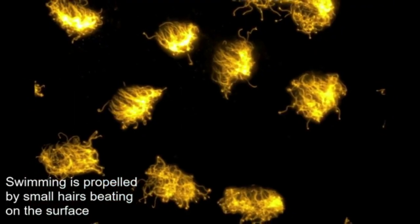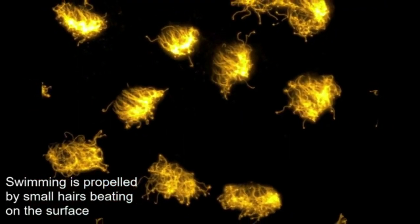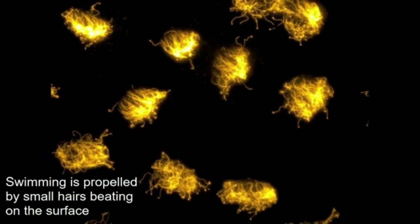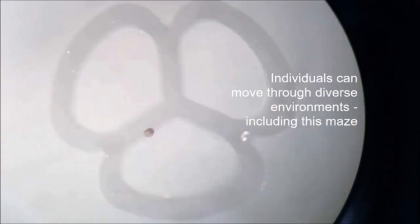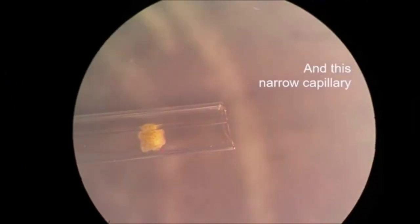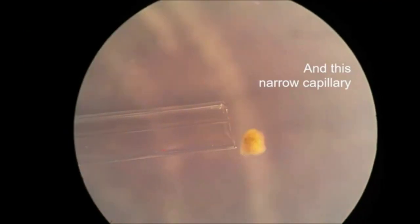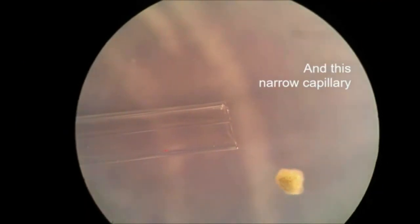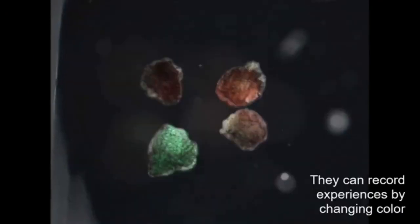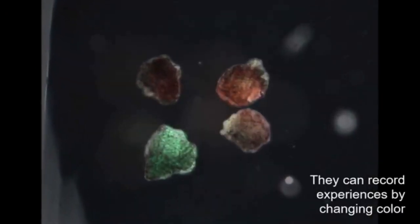One important feature added in the xenobot upgrade is the ability to record information. A central feature of robotics is the ability to record memory and use that information to modify the robot's actions and behavior. With that in mind, the Tufts scientists engineered the xenobots with a read-write capability to record one bit of information using a fluorescent reporter protein called EOS-FP, which normally glows green.